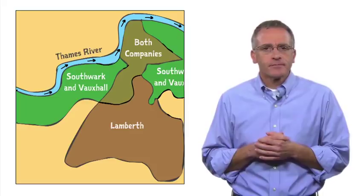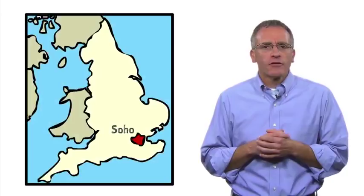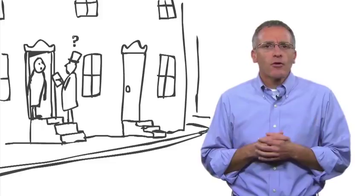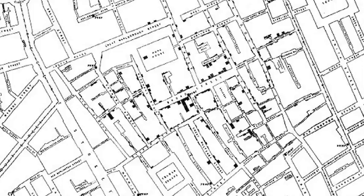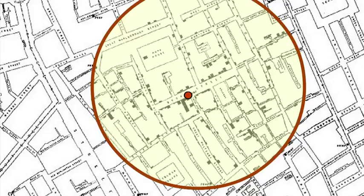Snow also did another quantitative study around the same time, and it is this that he is most famous for. Near his house in Soho, more than 500 people suddenly died of cholera. Snow trudged the streets around the Golden Square neighborhood asking where people got their water and whether they had cholera or not. This is the resulting map — one of the most famous in epidemiology. Snow marked every death on the map. There were several pumps in the area, but almost all the deaths surrounded the Broad Street water pump.